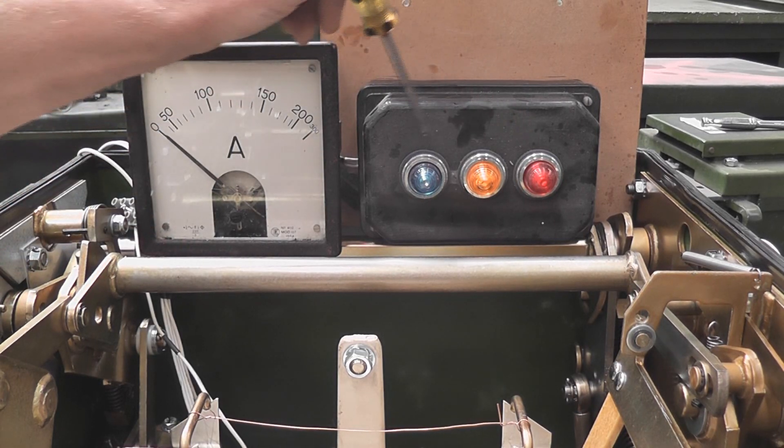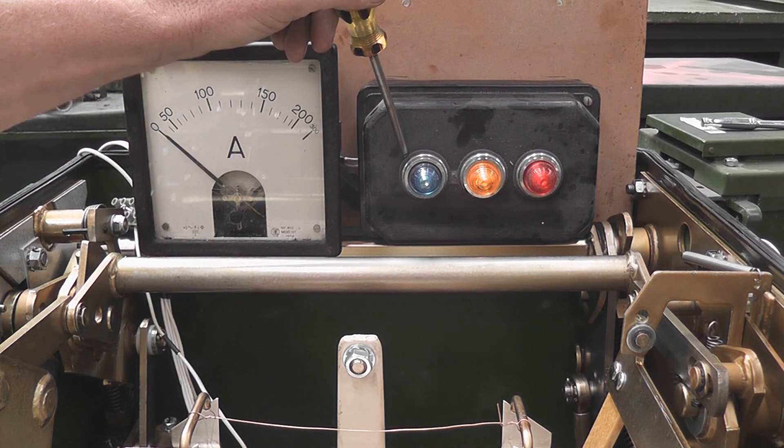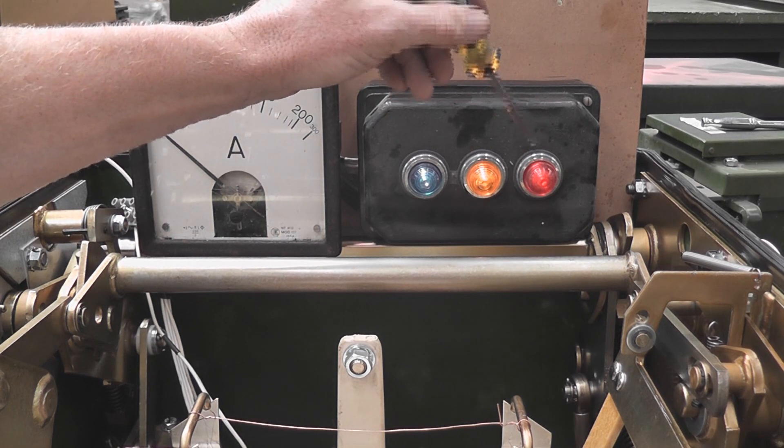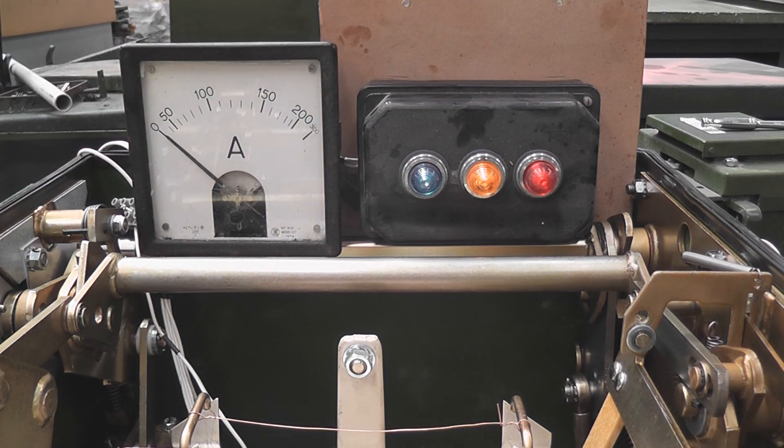Here we've got potential indicators: red, yellow, blue. I'm going to trip the red or blow the fuse and the red one should go out. 100 ampere, 100 volts power supply.